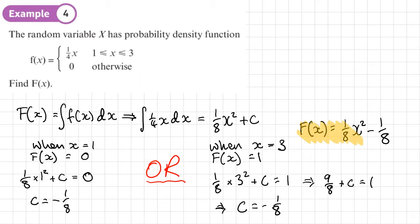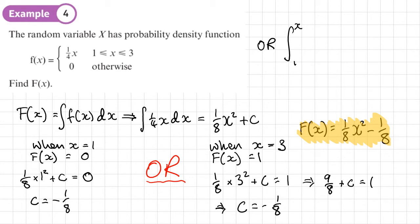An alternative method is to put in a lower limit of the lower value and an upper limit of X when integrating, because you're finding the probability up to X. That's an alternative method you can use.